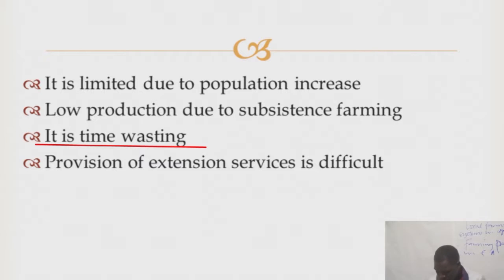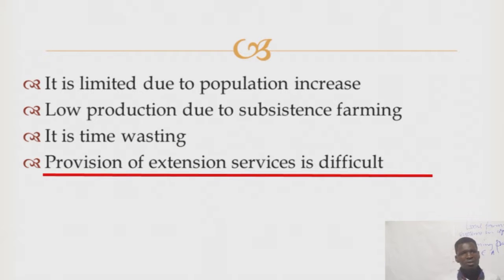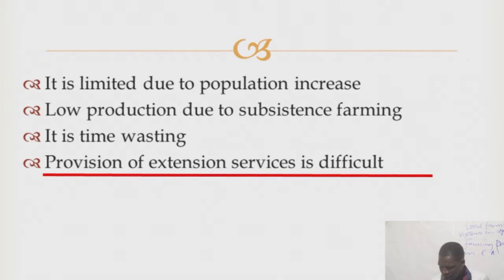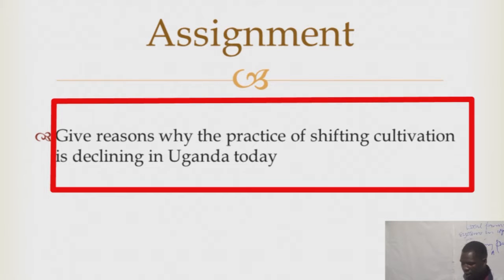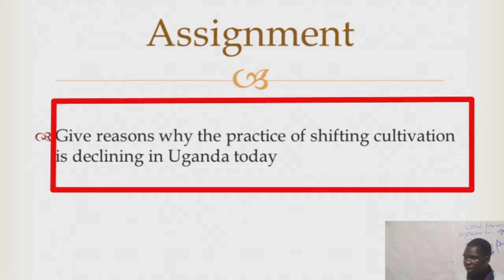Another disadvantage is that the provision of extension services is difficult because the farmer has no permanent settlement — they just keep on moving, making it quite difficult to provide extension services. Assignment: give reasons why the farming practice of shifting cultivation is declining in Uganda today.